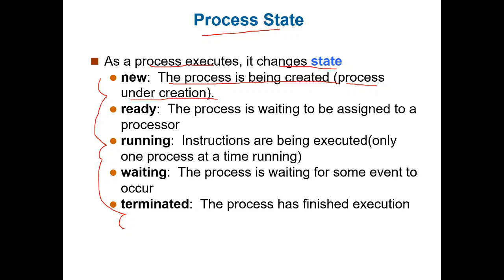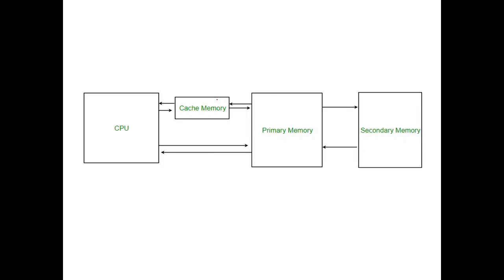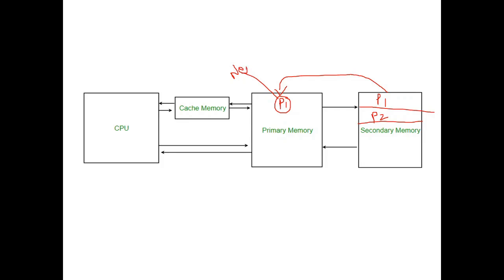Processes that are going to be created come under the new state. Programs are stored in secondary memory — for example P1 is the first program, P2 is the second program. Whenever these programs are brought into main memory for execution, P1 is loaded into main memory. Now P1 is under process creation, so P1 is in the new state. Whenever processes are created and are under creation, such processes come under the new state.